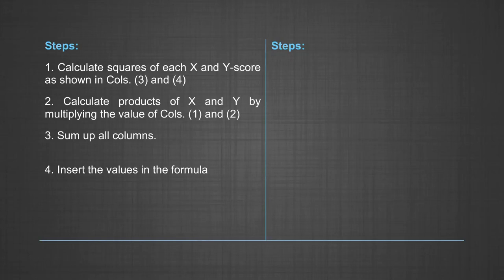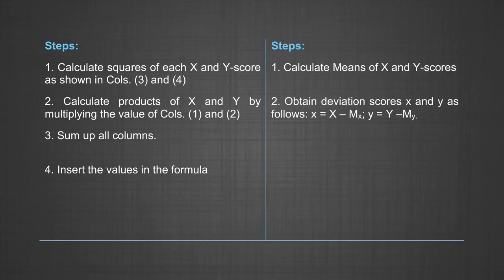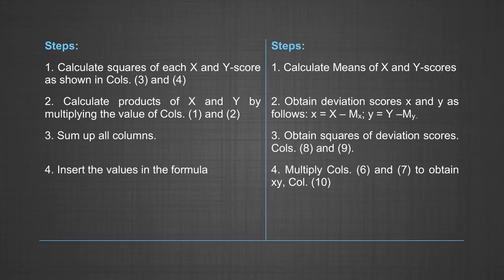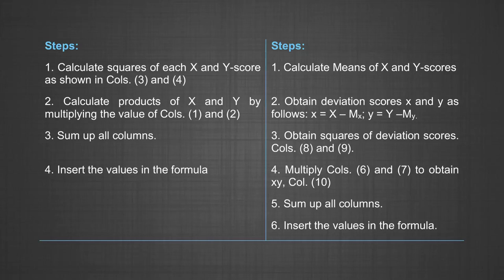For the deviation score method: Step 1, calculate means of X and Y scores. Step 2, obtain deviation scores: x equals X minus MX and y equals Y minus MY. Step 3, obtain squares of the deviation scores in columns 8 and 9. Step 4, multiply columns 6 and 7 to obtain xy in column 10. Step 5, sum up all columns. Step 6, insert the values in the formula.